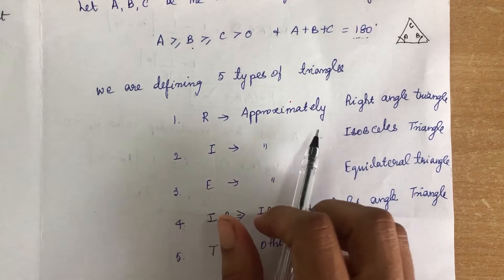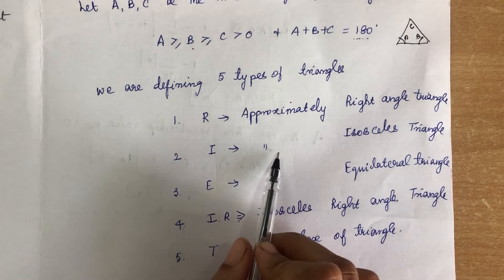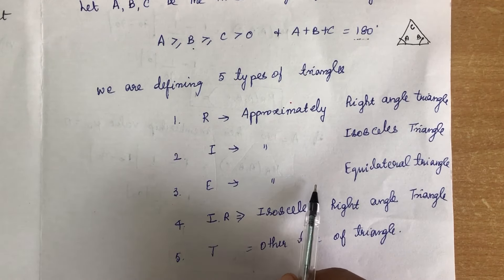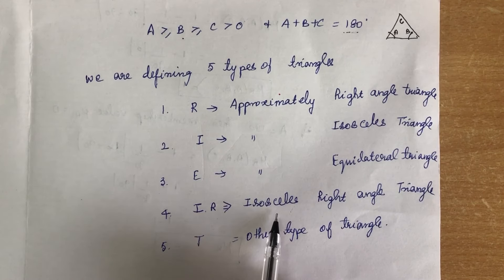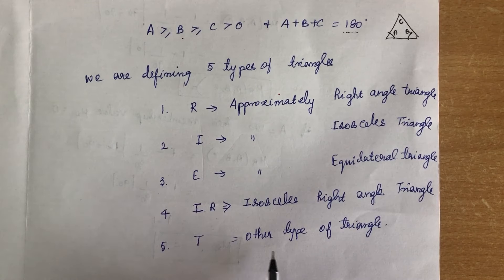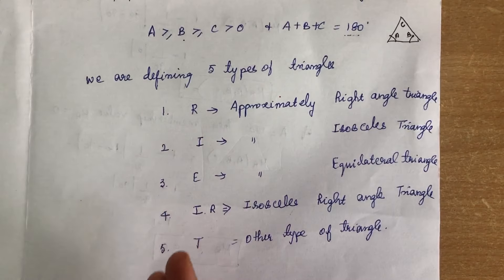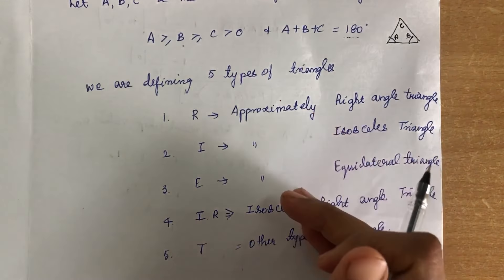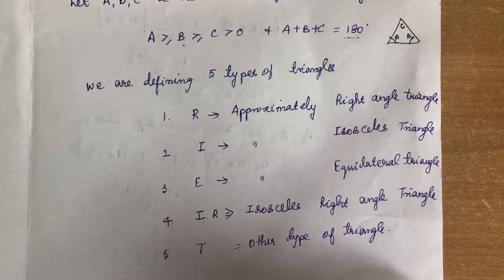When this condition is satisfied, we can derive five types of triangles using the inference method: R — approximately right angle triangle; I — approximately isosceles triangle; E — approximately equilateral triangle; IR — isosceles right triangle; and T — other types of triangle. For each triangle, we find the membership value and its function.